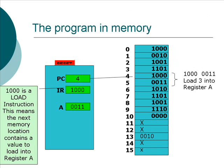Now the program counter increments to the next instruction, which starts at memory location number 4. The contents of memory location 4 is 1, 0, 0, 0, which is loaded into the instruction register. The computer interprets that instruction as: load the contents of the next memory location into register A. The contents of memory location 5 is 0, 0, 1, 1 — so 0, 0, 1, 1 is now in register A.